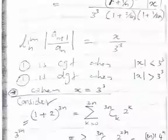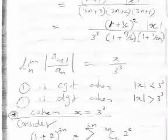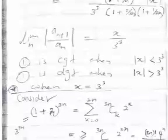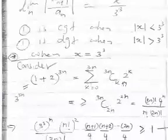When x = 27, we substitute into the power series and get something like (n!)³ / (3n)! · 27^n. Here we use the binomial expansion of (1 + 2)^{3n} = 3^{3n} = 27^n, so our term is one of the terms in that binomial expansion.